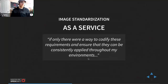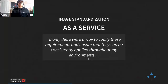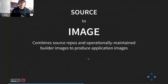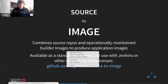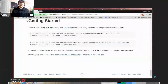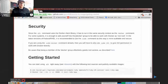One thing the OpenShift crew has been doing to help lock down these environments and make sure that only root users get root access even during a build lifecycle — and also a way to codify these requirements and ensure they're consistently applied — is using a tool like source-to-image. Source-to-image helps combine your application sources with an operationally maintained base or builder image in order to produce an application container image. This source-to-image effort is available as a standalone project at github.com/openshift/source-to-image.